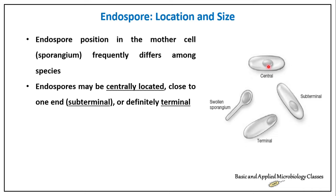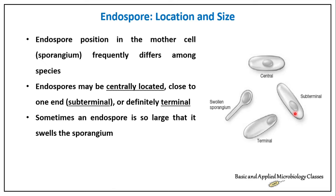Endospores can be present at a central position, a terminal position, or a sub-terminal position inside the rod-shaped bacterium. In many cases, the endospore is so large that it swells the sporangium, resulting in a swollen sporangium appearance.